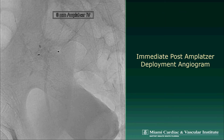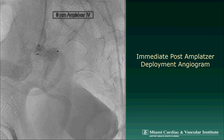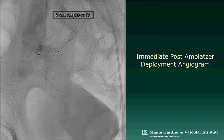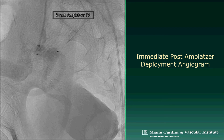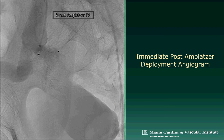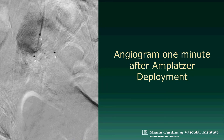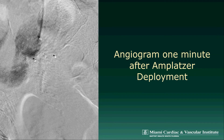The angiogram performed immediately after deployment of the Amplatzer through the 6 French leader catheter shows that there is still some flow going through the device. But in our experience, with a little bit of time, the Amplatzer will completely occlude the vessel, as shown on this one-minute post-deployment angiogram.